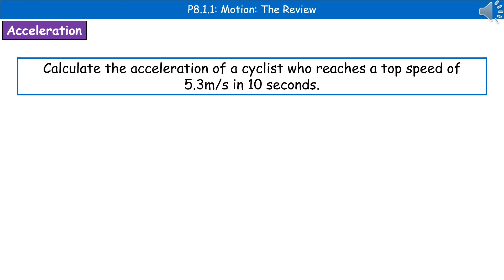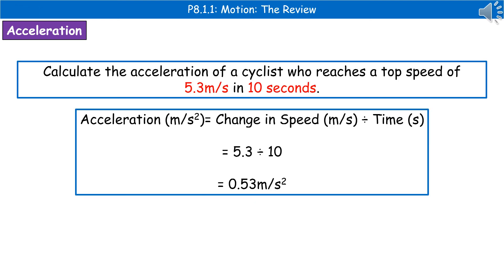The next thing they could ask is to calculate the acceleration of a cyclist who reaches a top speed of 5.3 metres per second in 10 seconds. First highlight or jot down the key information, then recall the formula: acceleration = change in speed ÷ time. Substitute in the values and work it out on a calculator, remembering to show your working in the answer space — that way you can still gain marks even if you have a calculator problem in the exam.